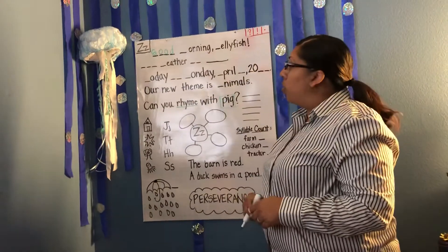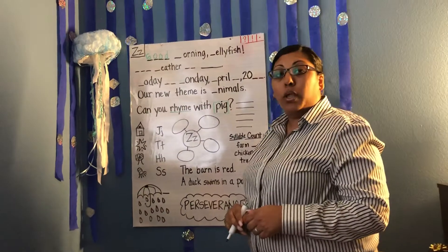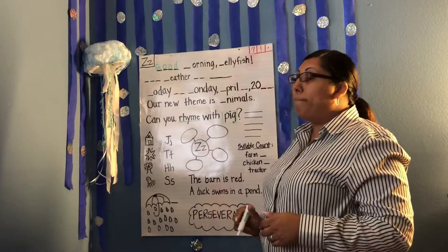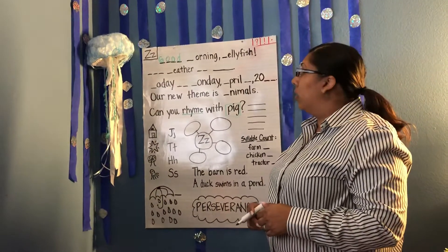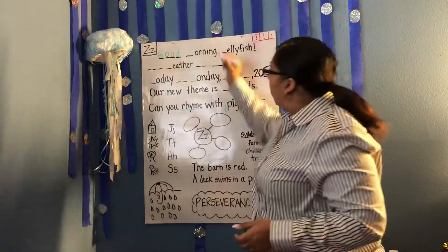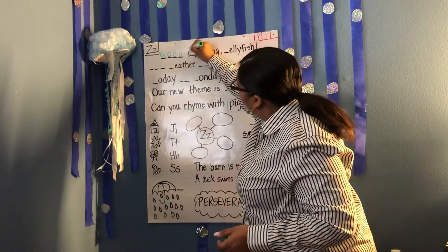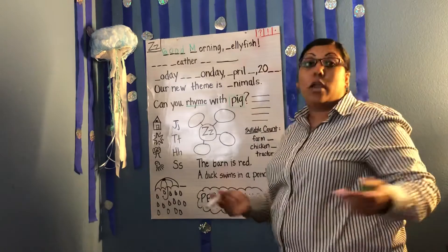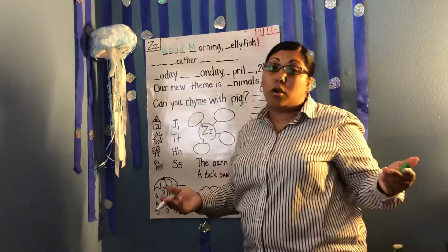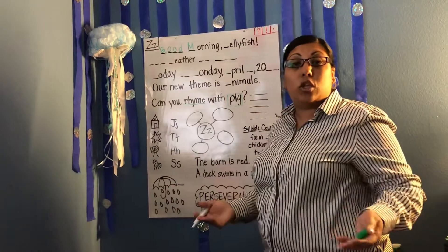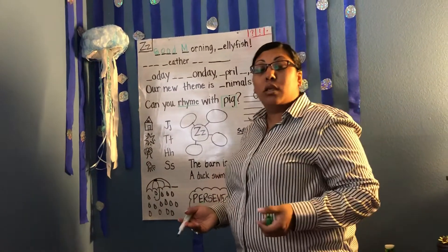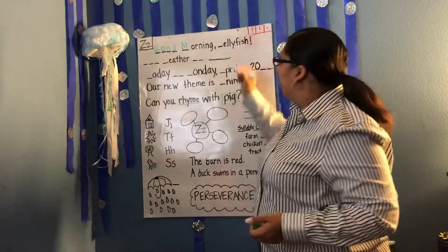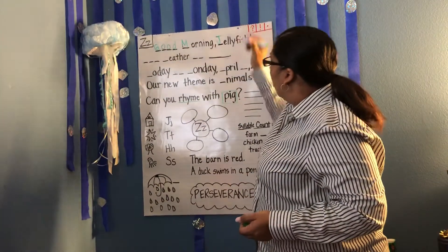The next word is morning. M-M-Morning. What does the word morning begin with, class? What letter makes that sound? That's correct — the letter M. Morning. J-J-Jellyfish. I know you guys are all going to get this because our class is Johnson's Jellyfish. What letter does J-J-J make? The letter J. Good job.